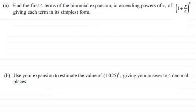Hi. Now, in this question, it's all about the binomial expansion. What we've got to do is find the first four terms of the binomial expansion in ascending powers of x of 1 plus x over 4 all to the power 8, giving each term in its simplest form. So, if this is something you'd like to try and you haven't done so already, just give you a moment to pause the video and have a go.